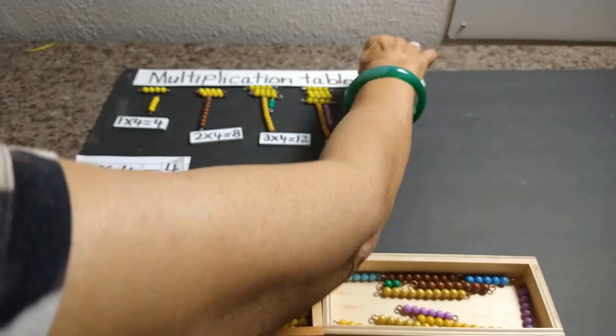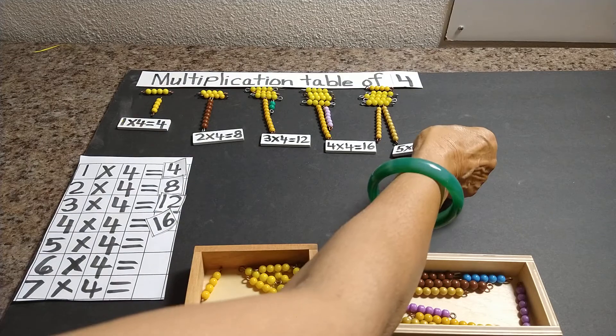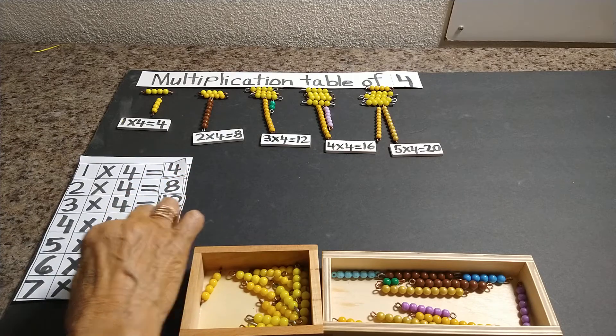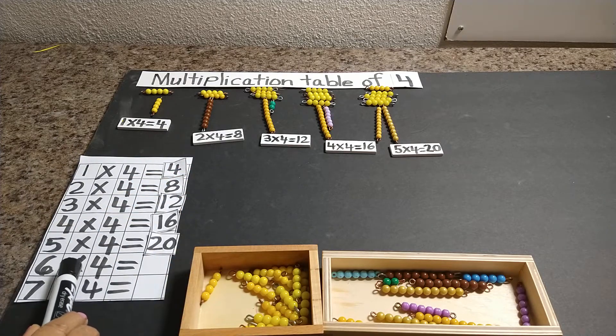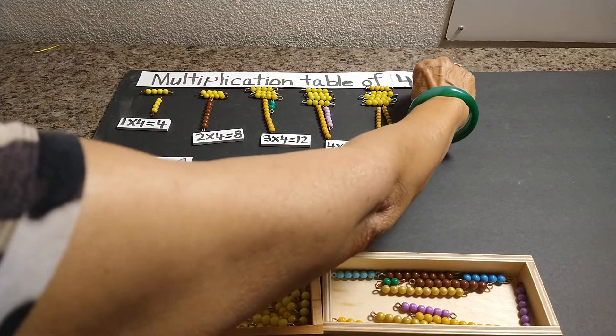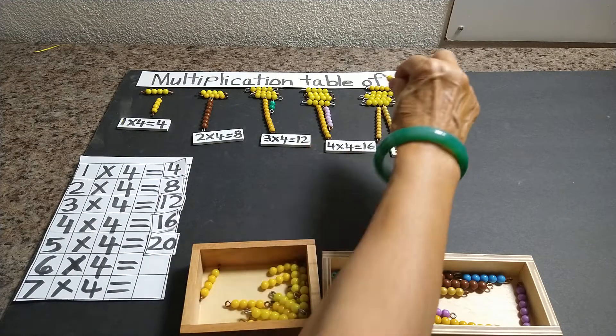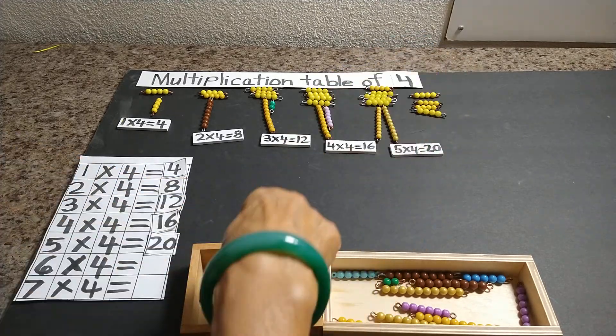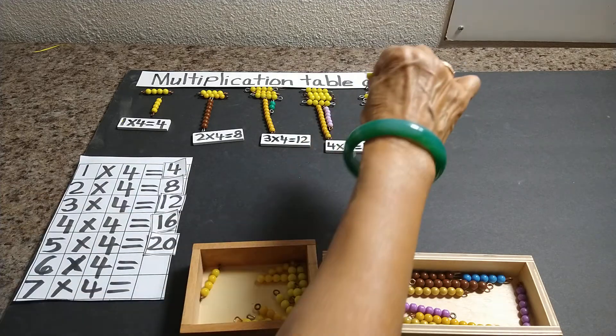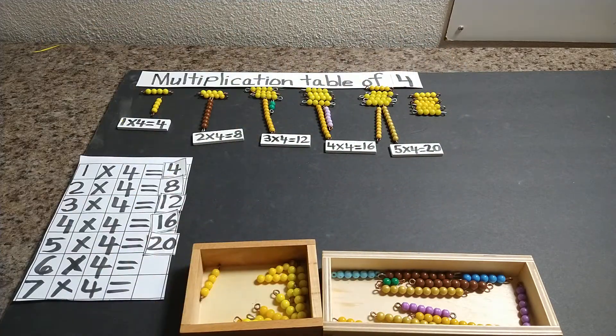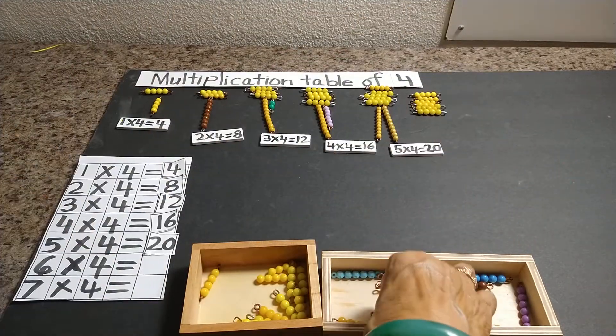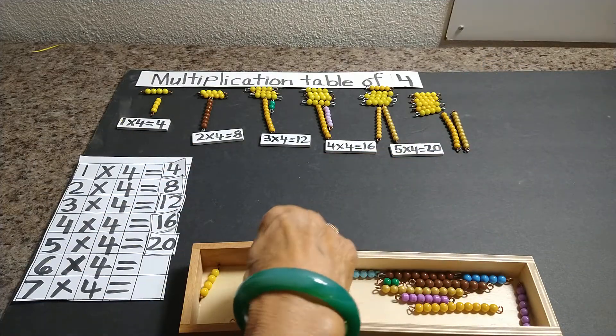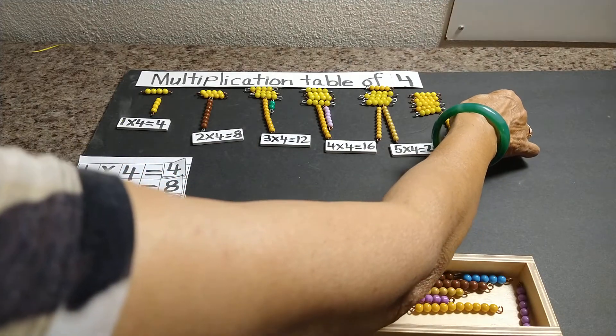So now we are right here. 6 times 4. 1 times 4, please count with me, 2 times 4, 3 times 4, 4 times 4, 5 times 4, 6 times 4. 6 times 4 is 24 so we need 2 ten bars and 4 bead bars. 20 and 4 more are 24. 6 times 4 is 24.